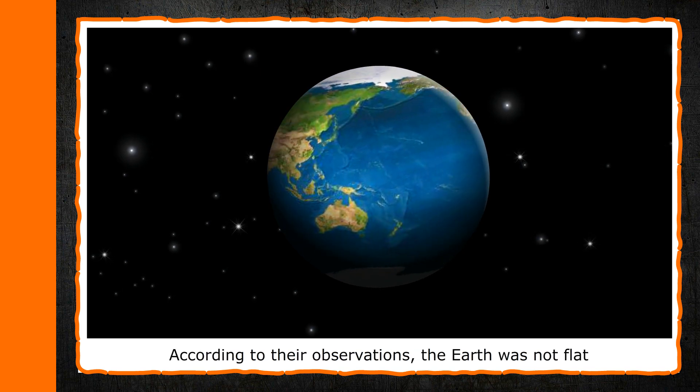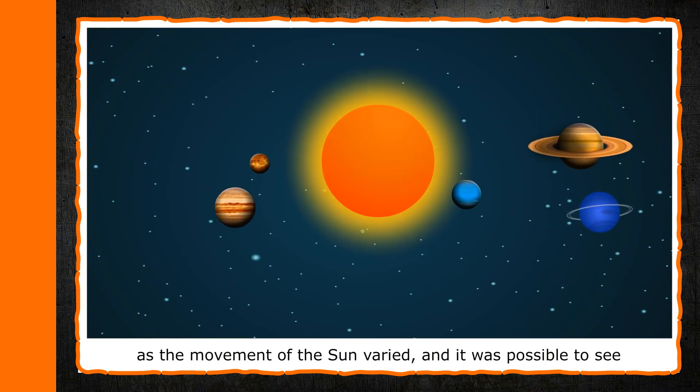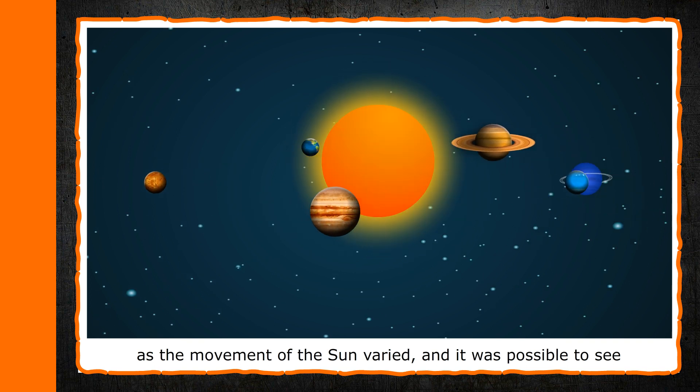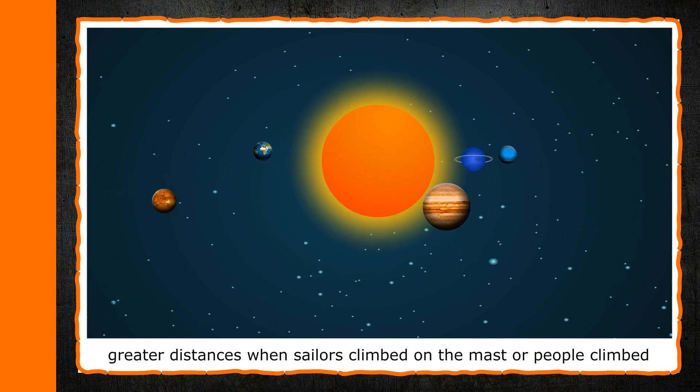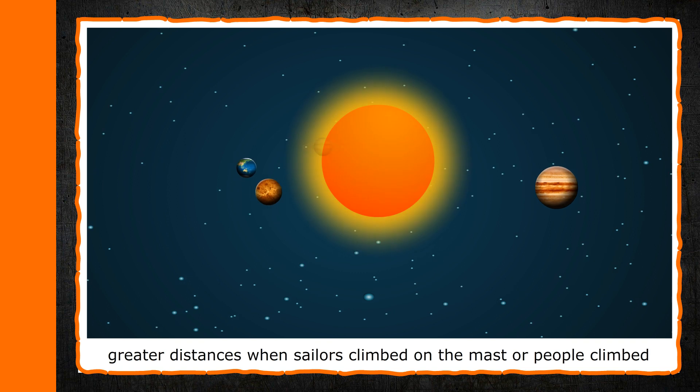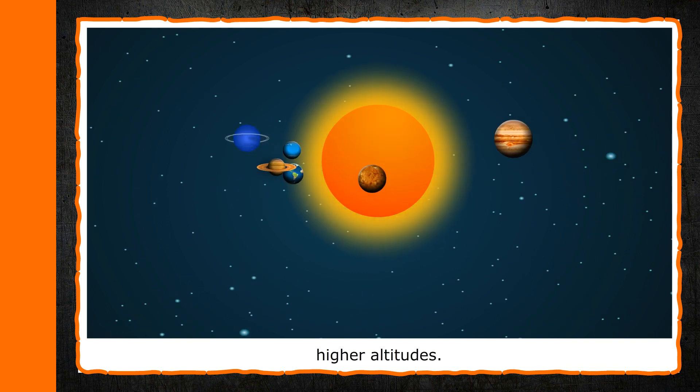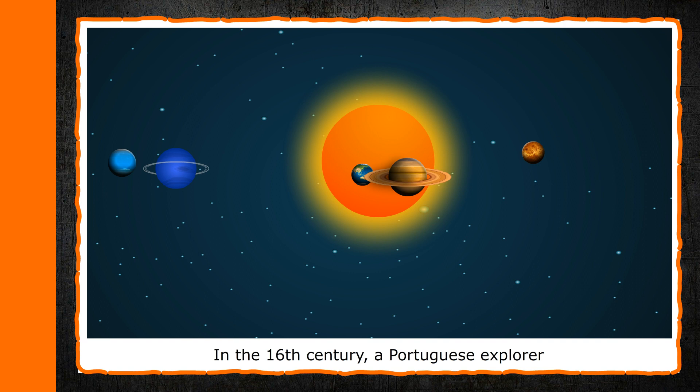According to their observations, the earth was not flat as the movement of the sun varied and it was possible to see greater distances when sailors climbed on the mast or people climbed higher altitudes.